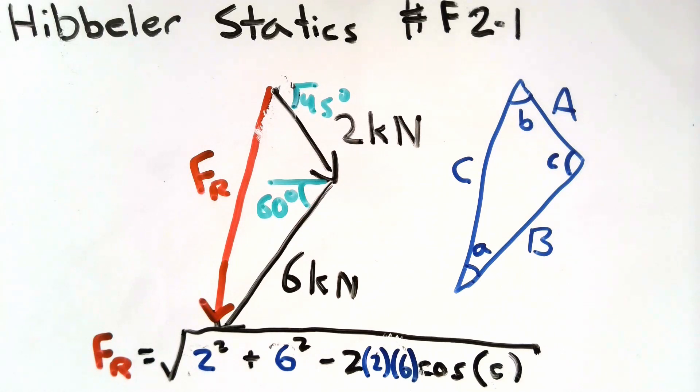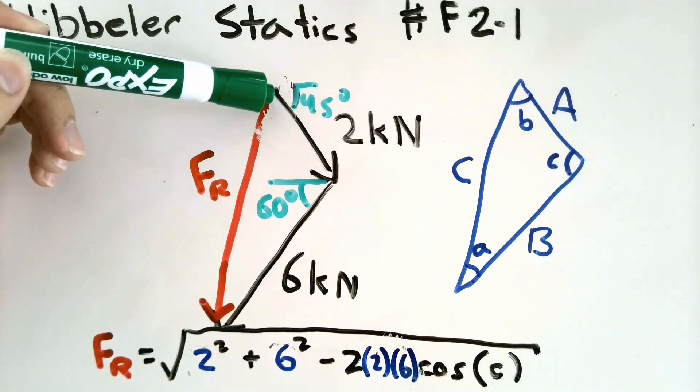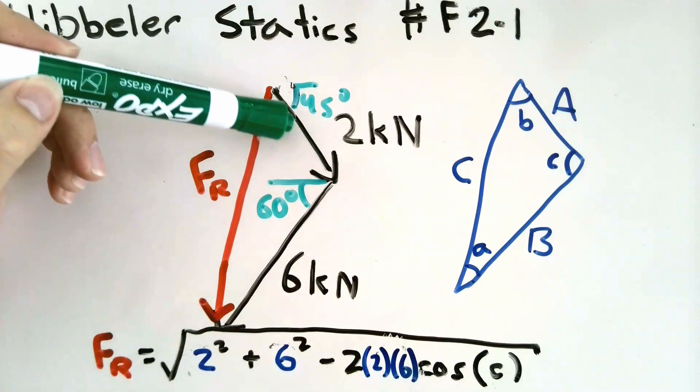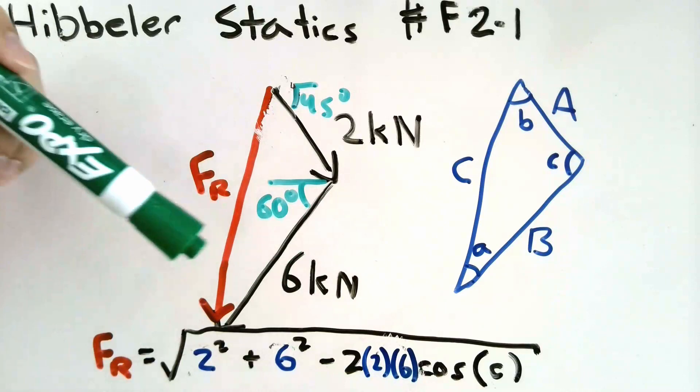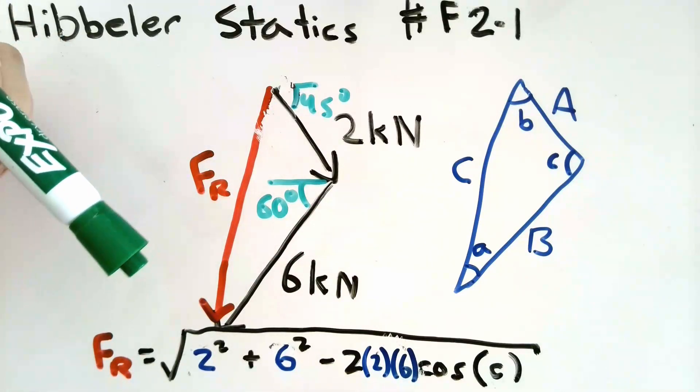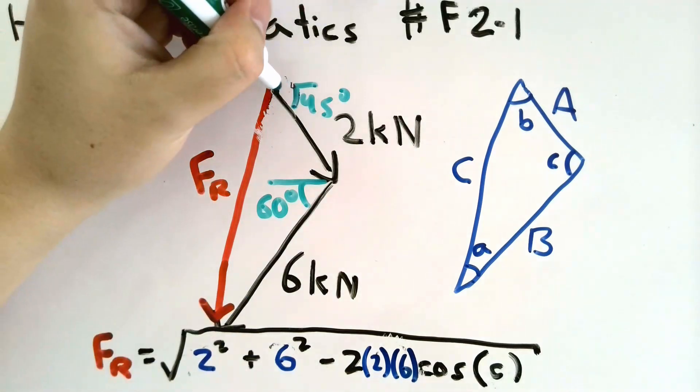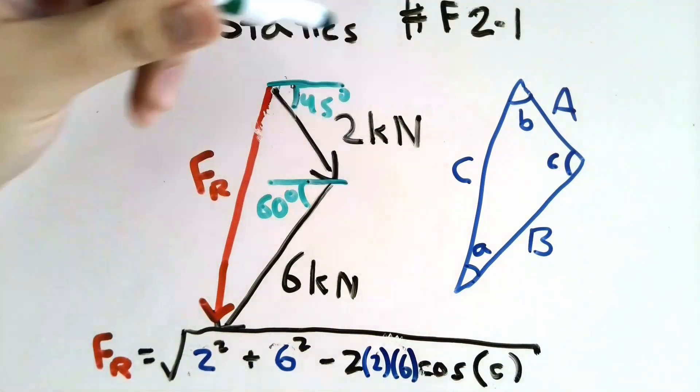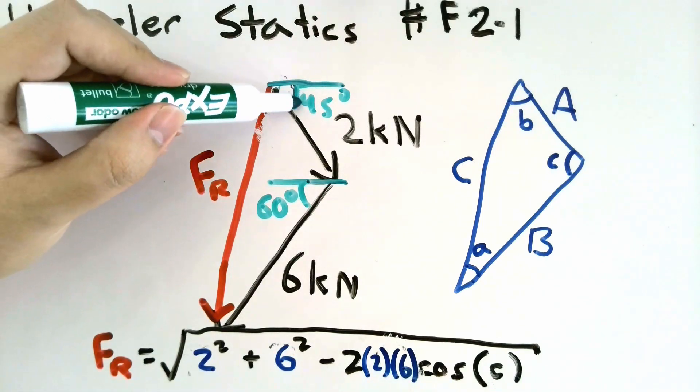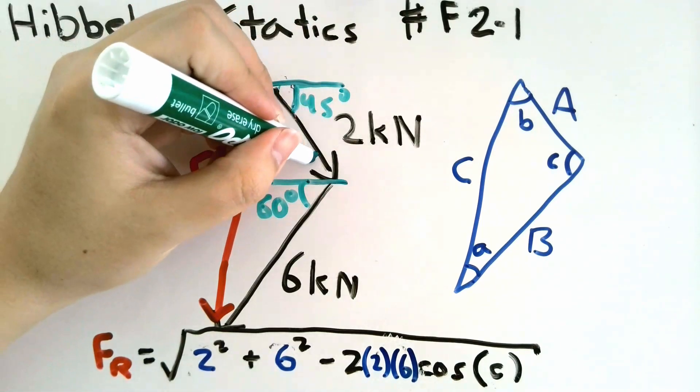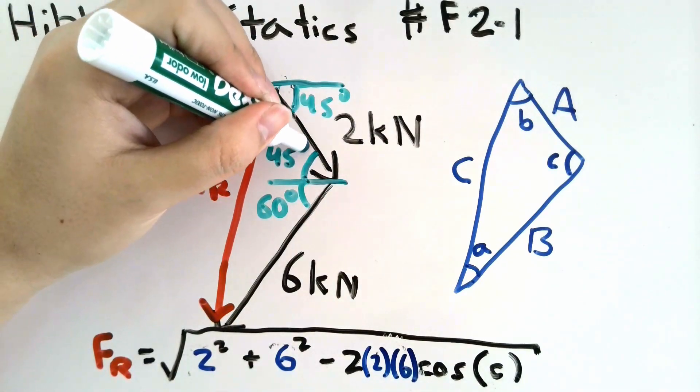Notice that the two kilonewton vector vector A is angled at a 45 degree from the horizontal and the six kilonewton vector, vector B is angled at 60 degrees from the horizontal. We know that if we were to draw two parallel lines, such as these two horizontal lines, then this angle should be equal to this angle. That means that we have another 45 degree here.